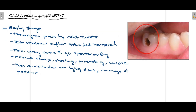Moving on to the clinical features of irreversible pulpitis, they are mainly divided into early stage and late stage. In the early stage, there is sudden pain mainly caused by cold and sweet foods. When the pain arises it is continuous — after removal of the stimulus the pain continues and does not resolve for some time, and the pain may come and go spontaneously. For example, a person bites on that tooth during eating and the pain continues for a longer period of time. The pain is described as sharp, shooting, piercing, and most of the time severe.